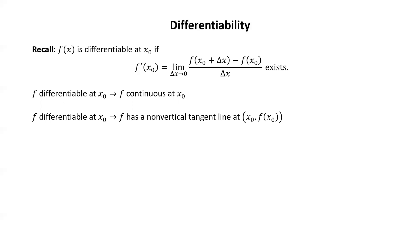You might think it would be natural to generalize the definition of differentiability to a function of two variables by saying that a function is differentiable if both partial derivatives at the given point exist. Unfortunately, in general, these properties that we wish to be satisfied will not be. Let's look at an example so that we could see this.